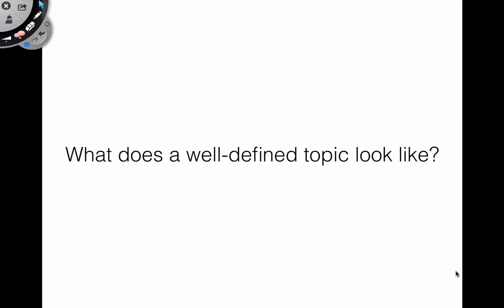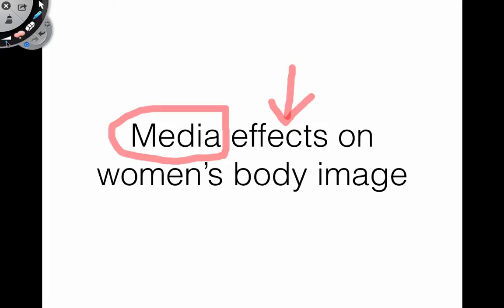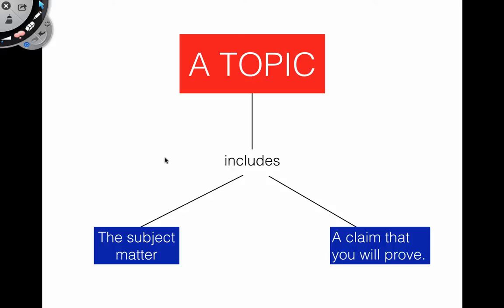So what does a well-defined topic look like? Let's start with an example of what not to do. Take this topic — it is very broad. The term 'media' is not defined, as media can mean television, movies, magazines, radio, social media, etc. 'Effects' is also not defined — are you talking about behavioral effects, or self-esteem? A good topic includes two things: it tells you the subject matter and it provides a claim — what you are trying to prove by doing the research.